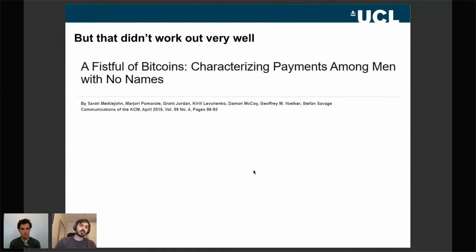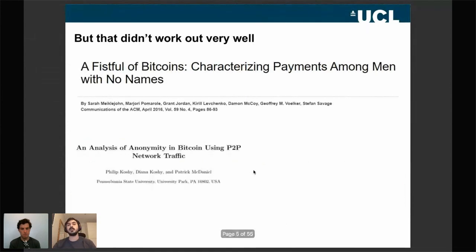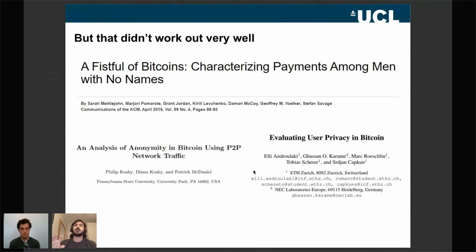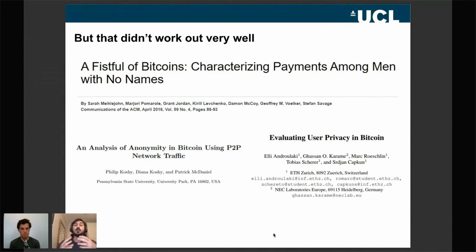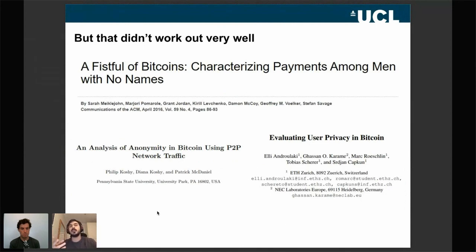Research showed otherwise. A lot of papers attacked different layers of the Bitcoin protocol. The most well-known is 'A Fistful of Bitcoins,' where the authors developed heuristics that cluster together different public keys that presumably belong to the same entity — techniques still used today. Other papers attacked the network layer, using communication between Bitcoin nodes rather than blockchain data to infer important information.